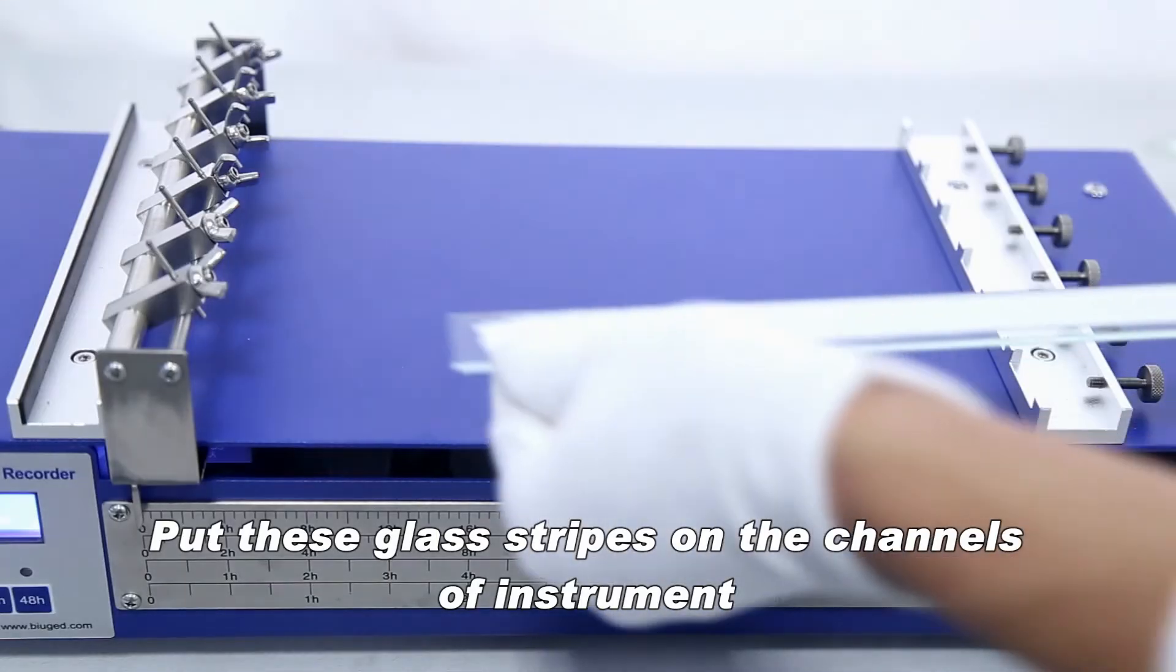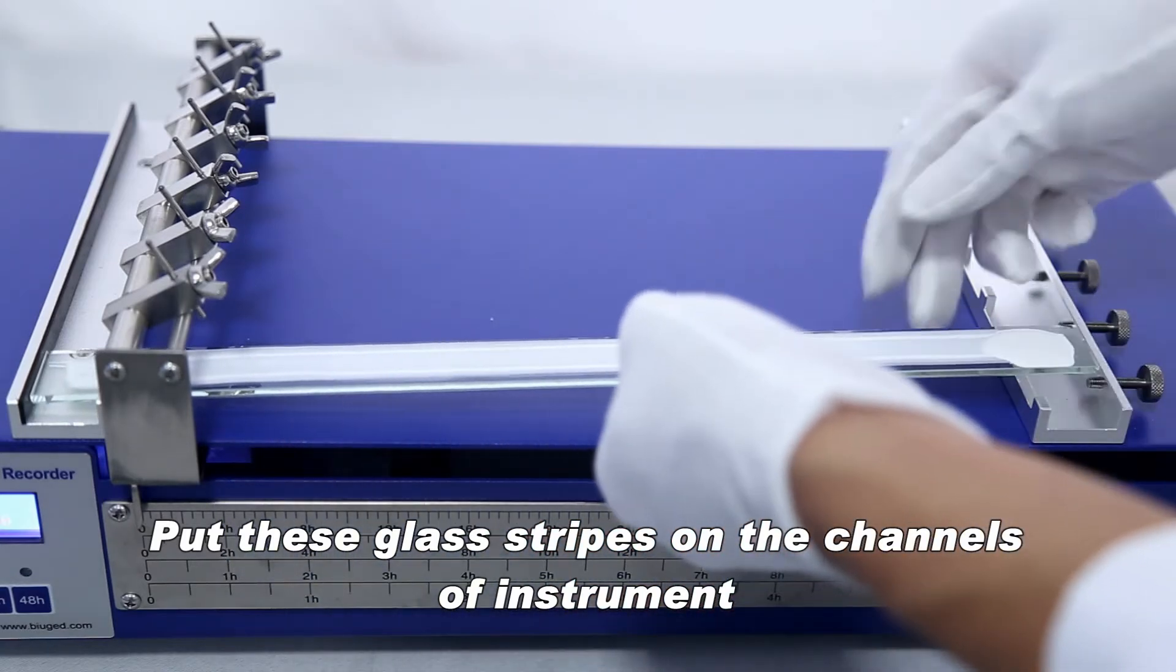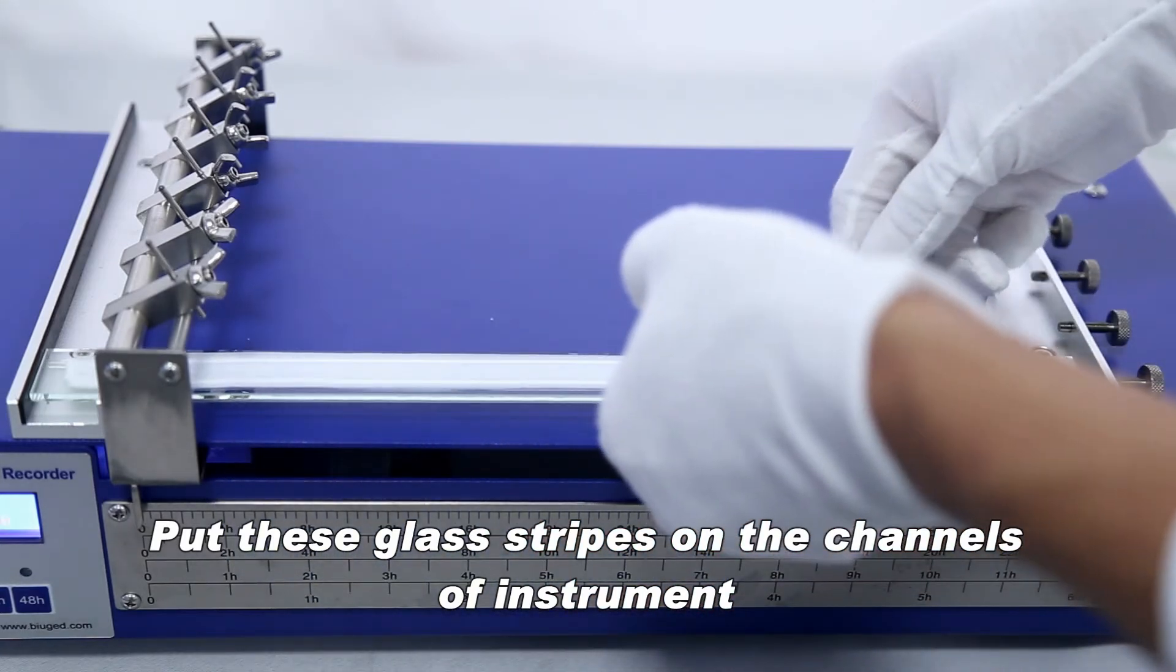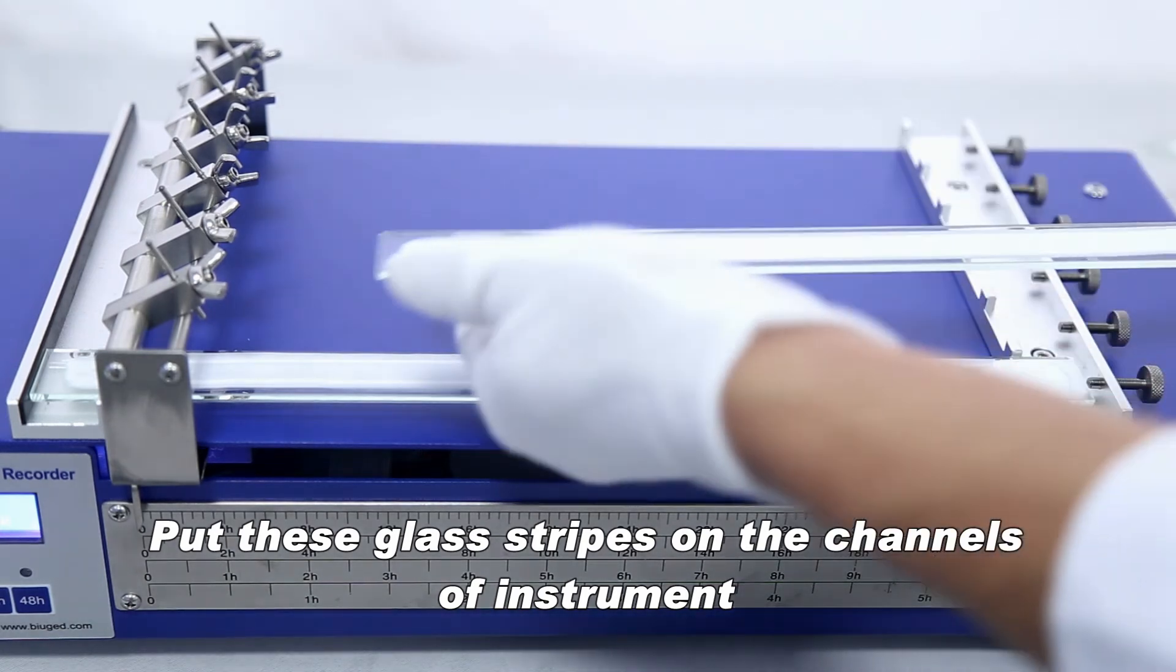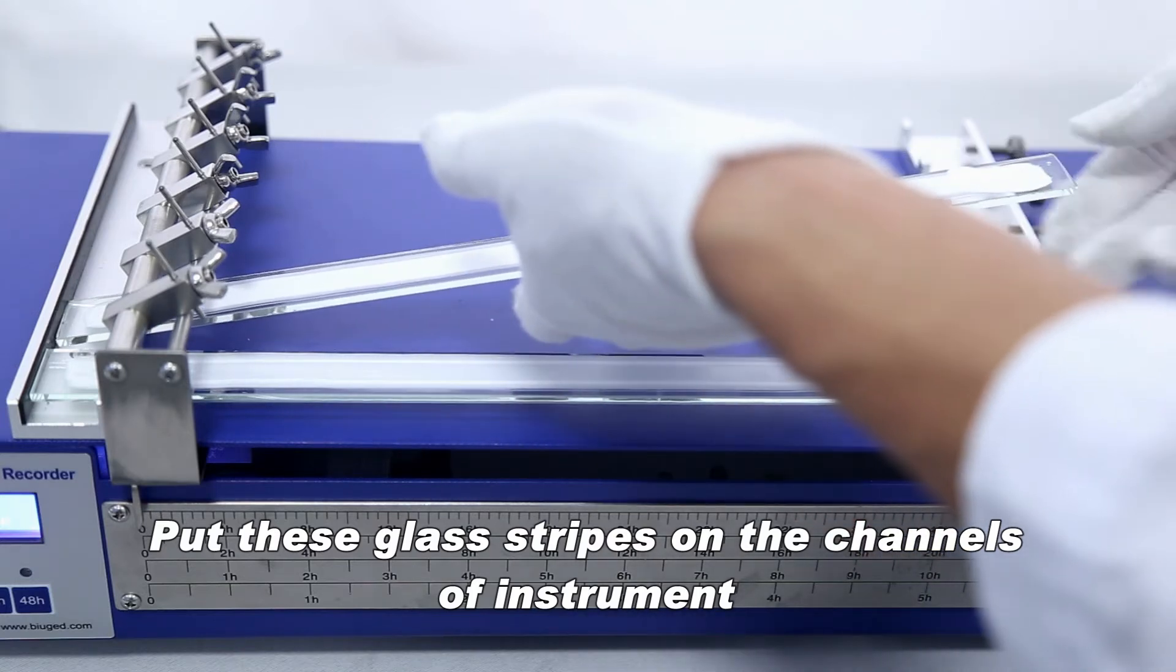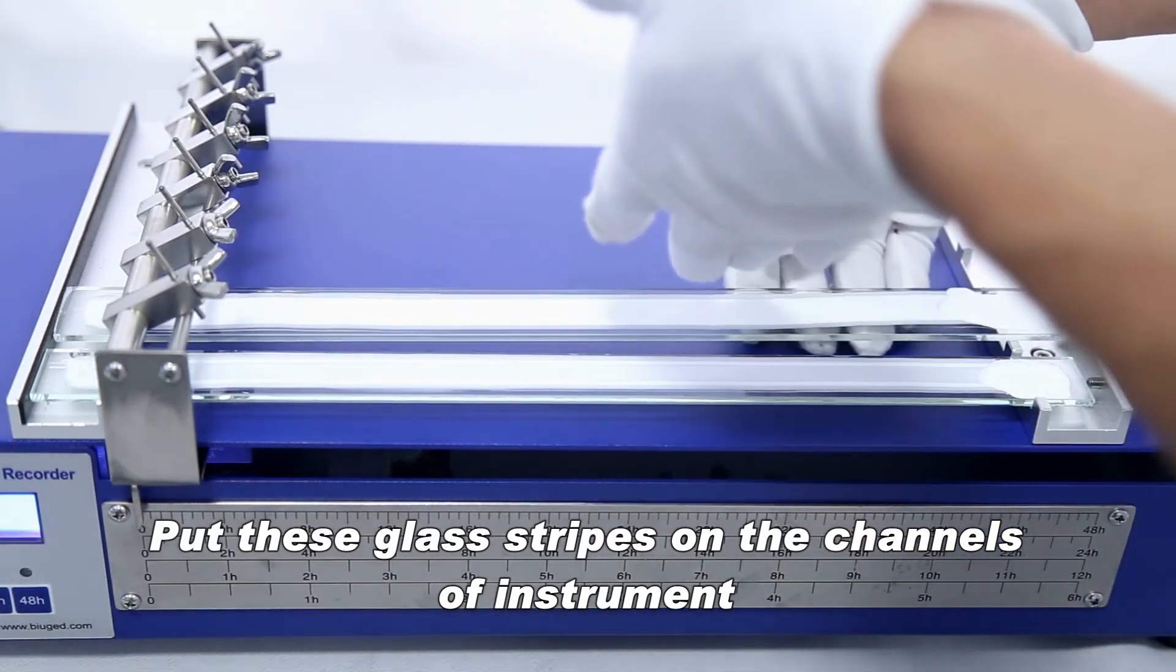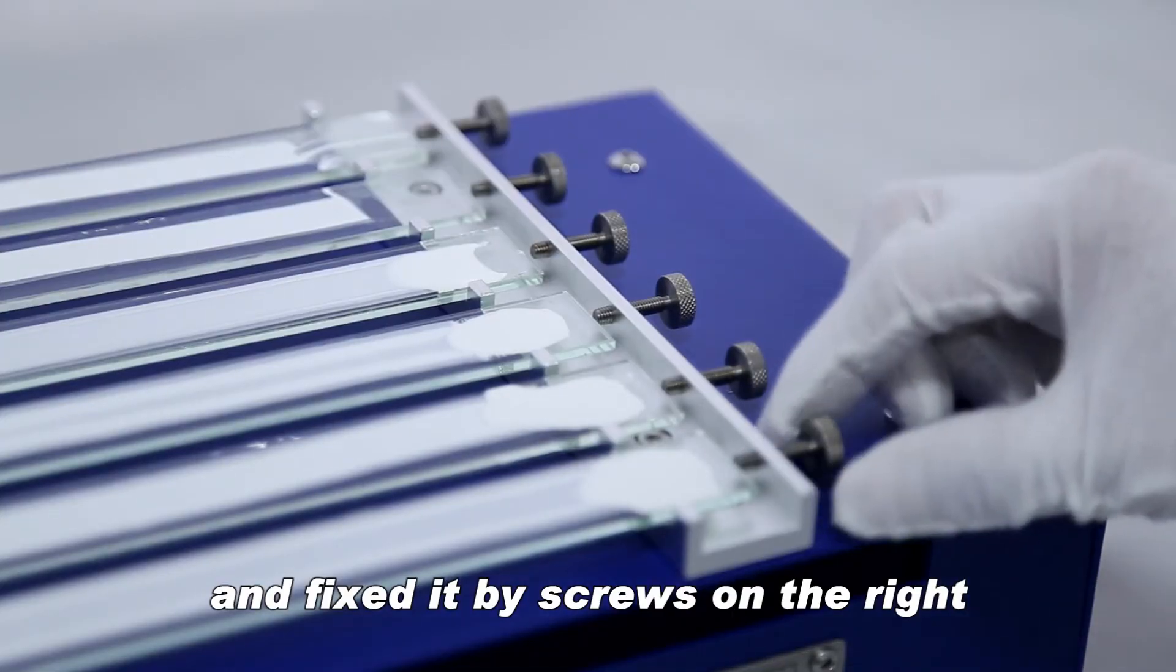Put the glass stripes on the channels of the instrument and fix them by screws on the right.